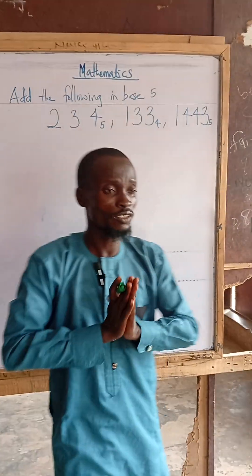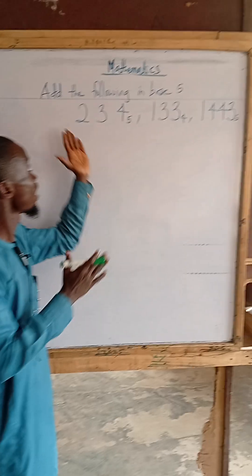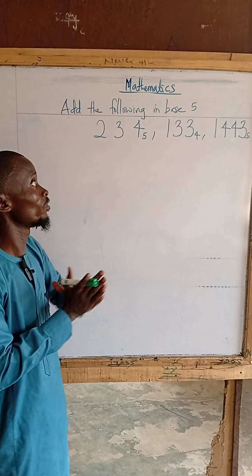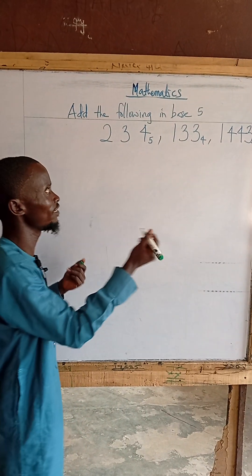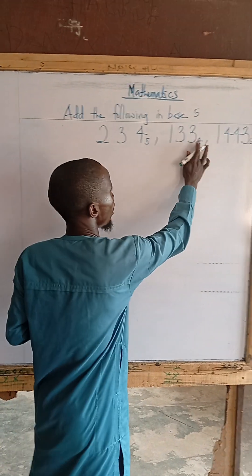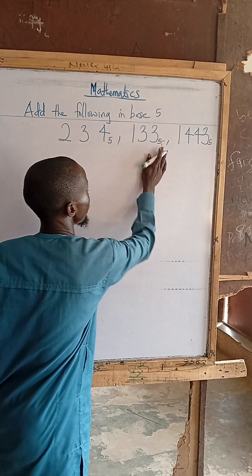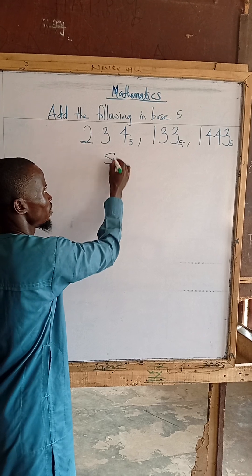If you are given this problem, you have to find the following in base 5. It's very easy to add all the following numbers. They are already given in base 5.